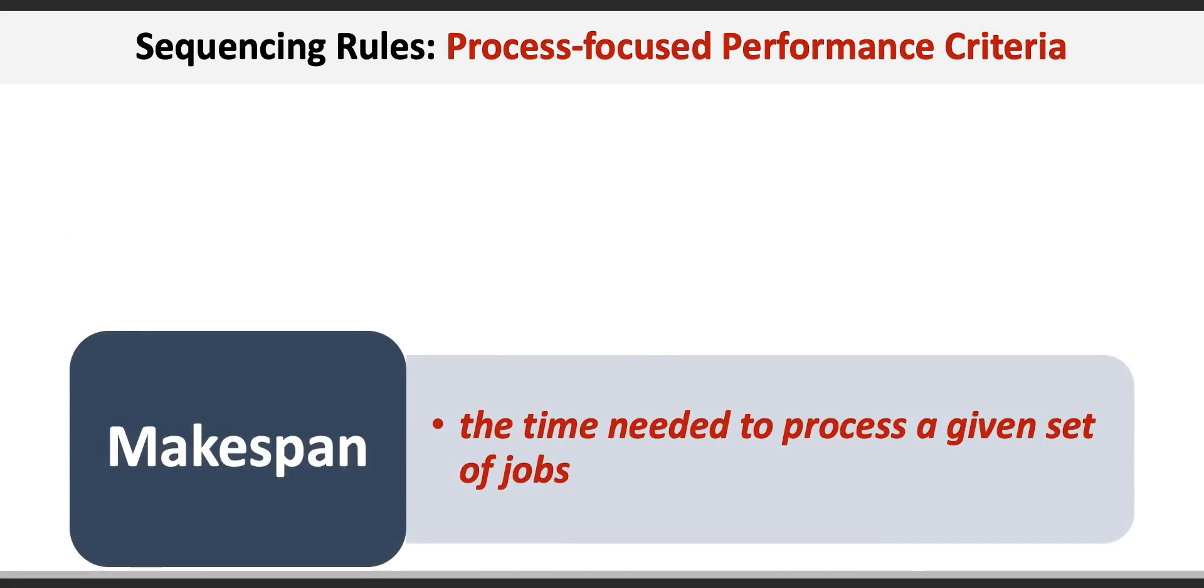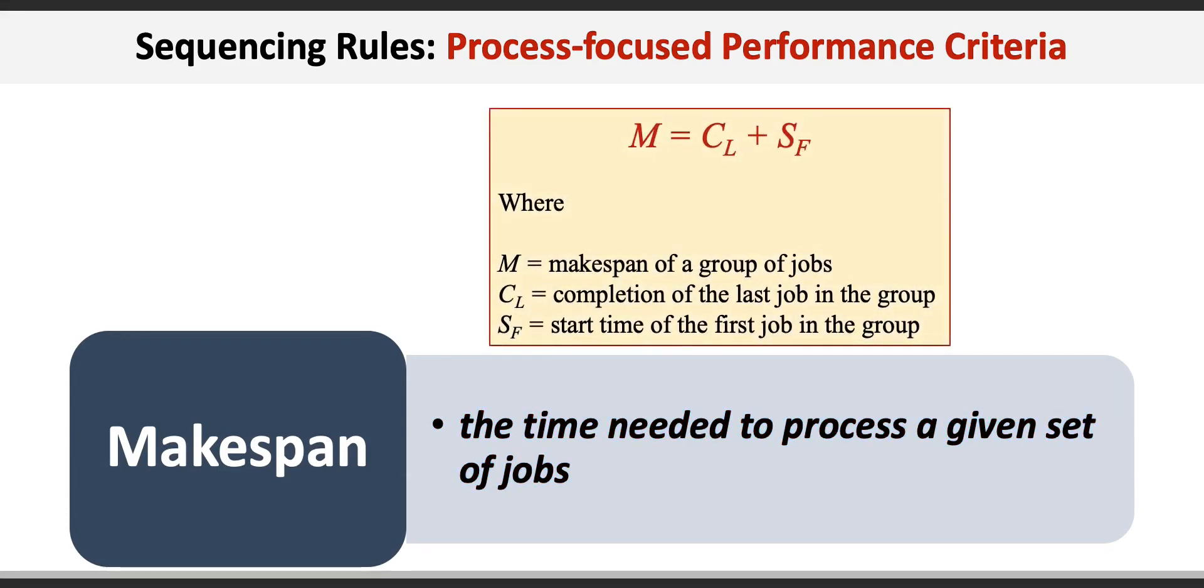A short makespan aims to achieve high capacity utilization and resources by getting all the jobs out of the shop quickly and can be calculated using another simple formula: m = cl - cf, where m is the makespan of a group of jobs, cl is the completion time of the last job in the group, and sf is the start time of the first job in the group.